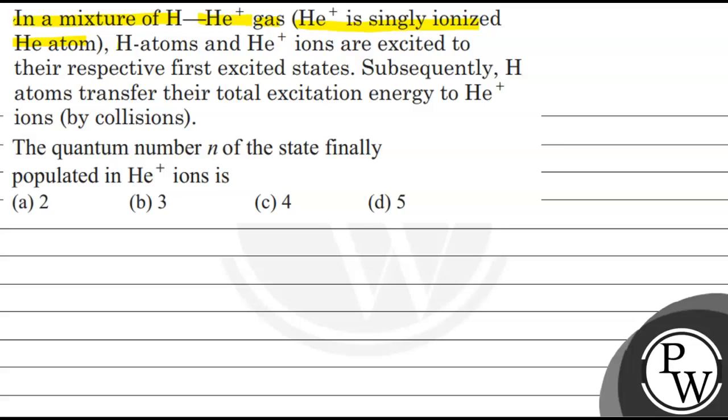Helium atom, hydrogen atom and helium ions are excited to their respective first excited states. Subsequently, hydrogen atoms transfer their total excitation energy to helium ions by collision.